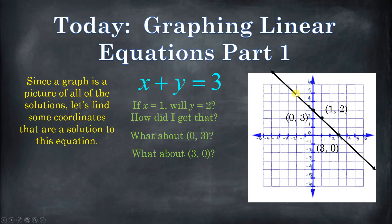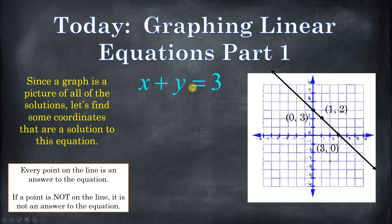So like, for example, this point right here. This is negative 2 comma 5. Well, negative 2 plus 5 is 3. That is a solution to the equation. Every single point on the line is a solution, and any point not is not. That's how you do it right there.